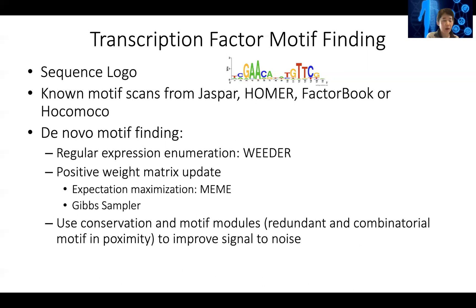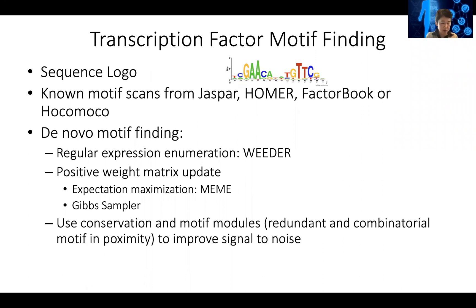These algorithms work quite well in bacteria and yeast, maybe in C. elegans, but for vertebrate genomes like zebrafish, mouse, or human, those methods don't work very well because the coding sequence is only about 2%. The remaining 98% of the genome can all potentially code for transcription factor motif binding sites, which is too big a search space. So people use evolutionary conservation scores to narrow down input sequences, or look at combinatorial motifs appearing in proximity to reduce search space and improve signal to noise.